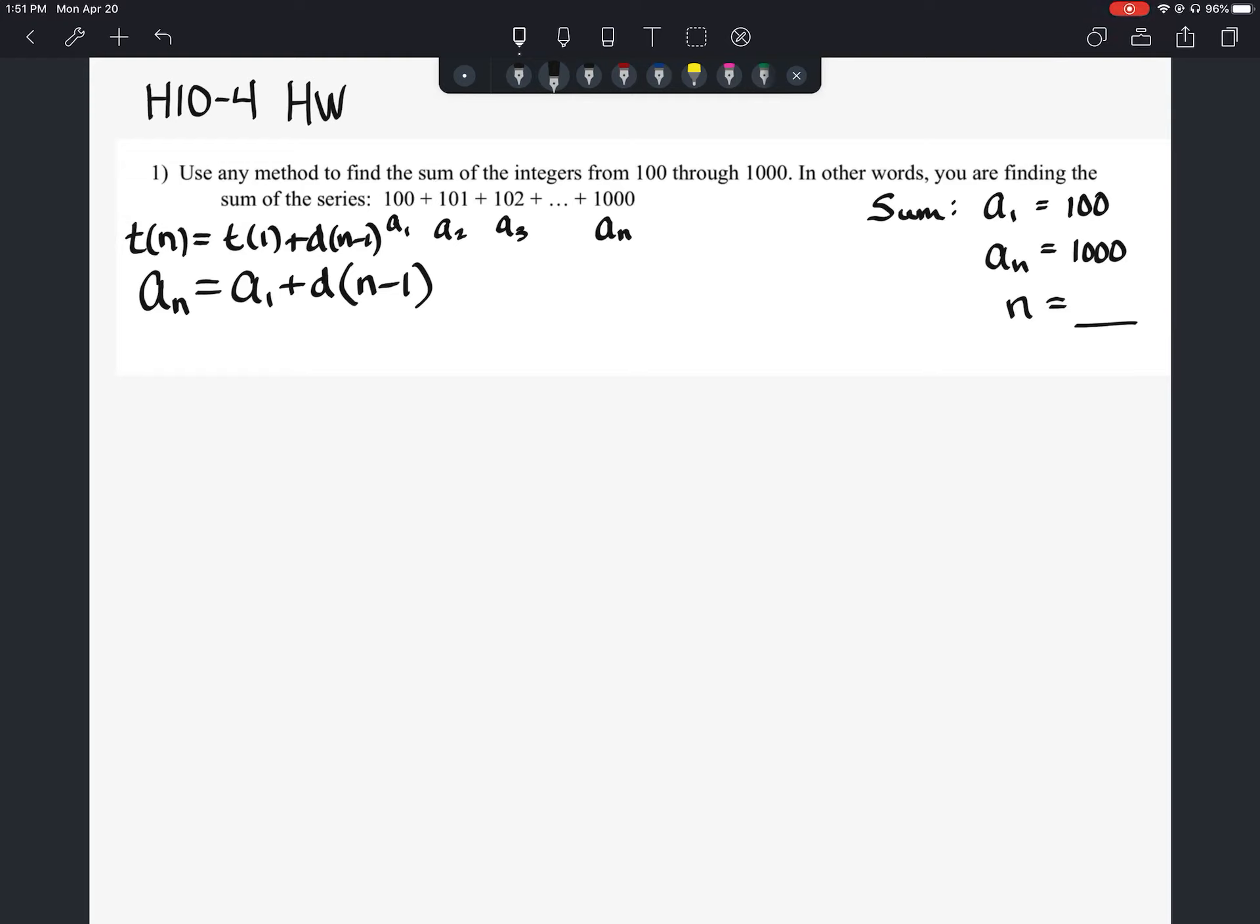So since I know that a sub n is 1000, I can put that in here. We can say 1000 equals our first term. Our first term is 100. So we'll put that in here. Our common difference here, as we go from term to term, you're seeing here they're increasing by 1. So we're going to say plus 1 times the quantity of n minus 1.